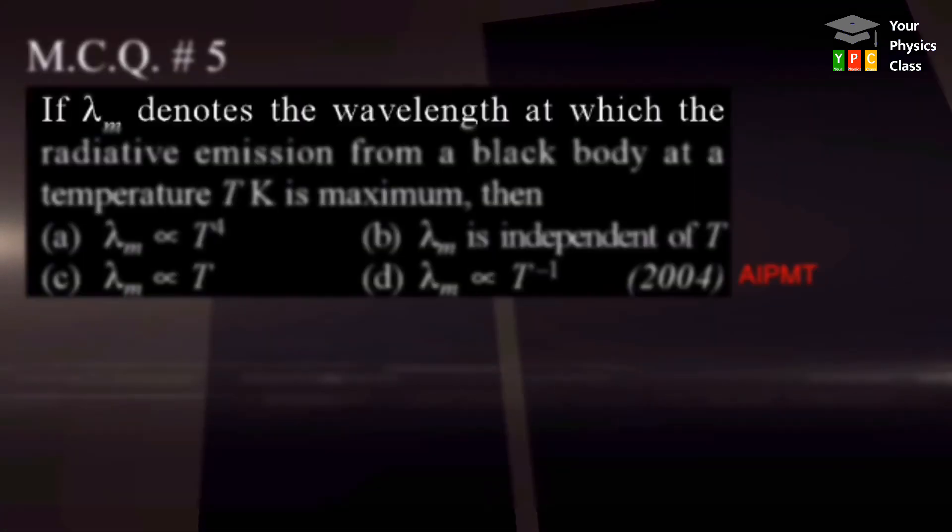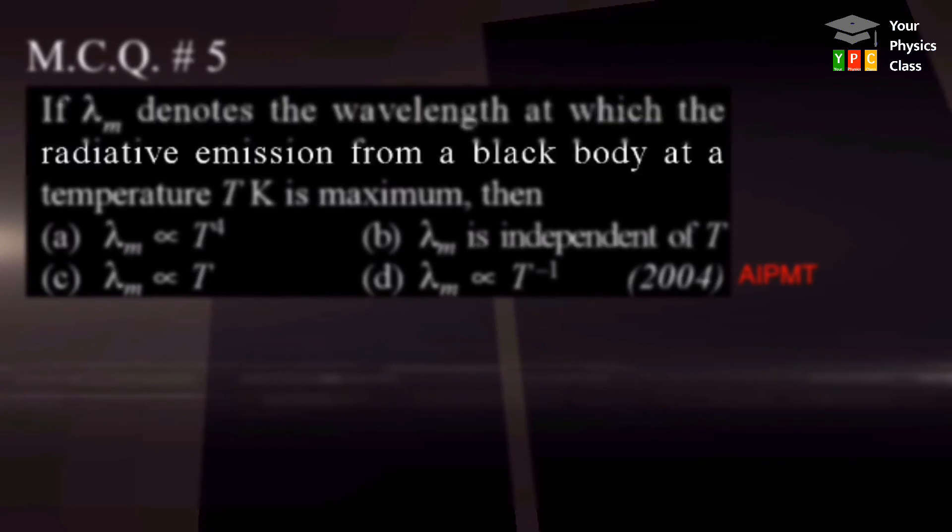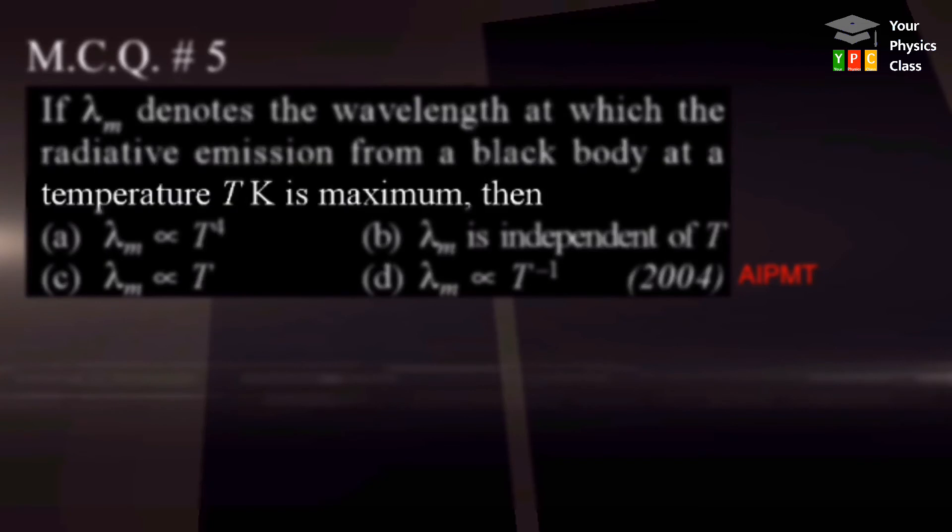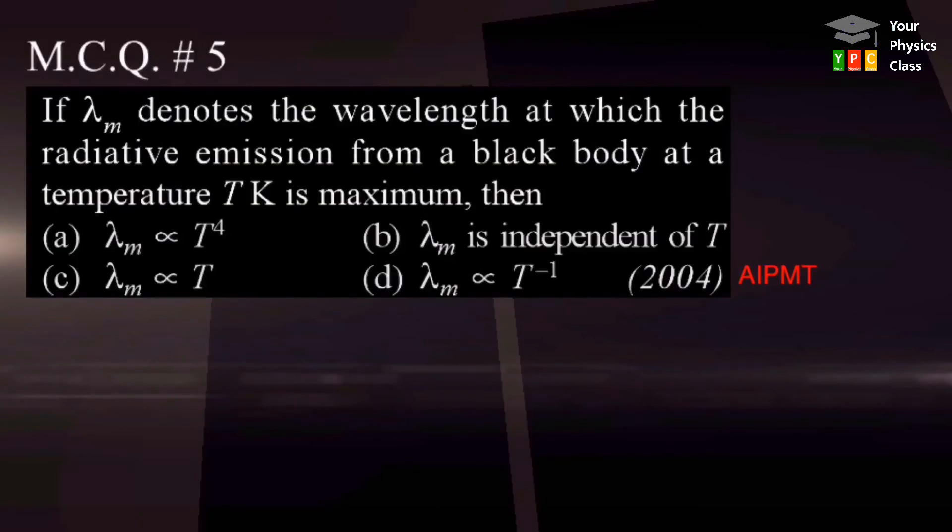If lambda m denotes the wavelength at which radiative emission from a black body at a temperature T Kelvin is maximum, then: option A, lambda max is directly proportional to T to the power 4; lambda max is independent of T; lambda max is directly proportional to T; lambda max is inversely proportional to T. From Wien's displacement law, T is the right answer.